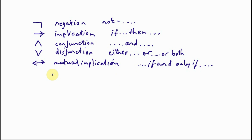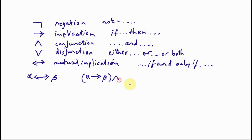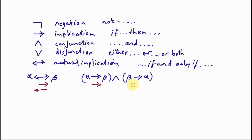A moment ago I defined mutual implication in terms of another newly defined connective: alpha mutual implication beta is a shorthand for alpha arrow beta, conjoined with beta arrow alpha — omitting the outermost parentheses from both wffs according to the rules for omitting parentheses. So this wff has an arrow going from alpha to beta, and another going from beta to alpha.